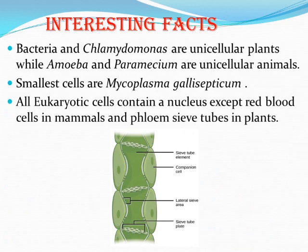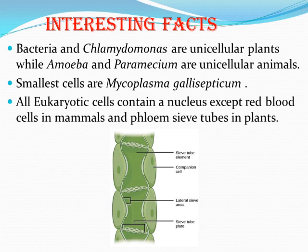Some interesting facts: bacteria and chlamydomonas are unicellular plants, while amoeba and paramecium are unicellular animals. So if asked to name unicellular animals, write amoeba or paramecium — not chlamydomonas. The smallest cells are Mycoplasma gallisepticum — a type of bacteria, even smaller than typical bacteria. Remember this name as it is frequently asked.